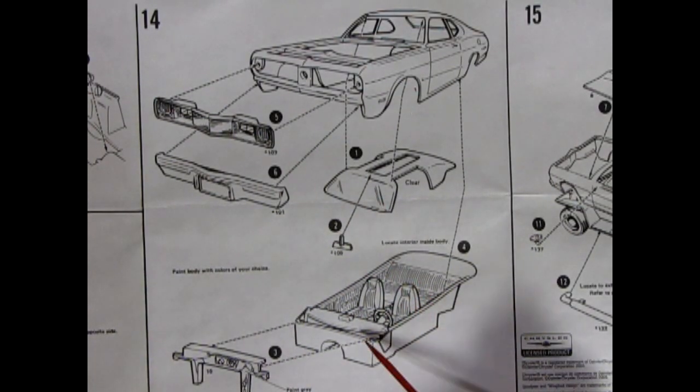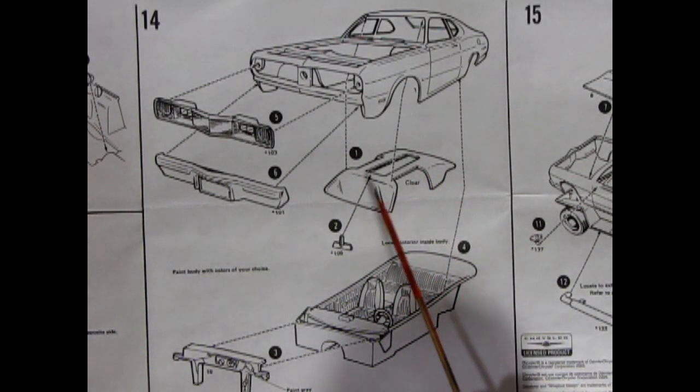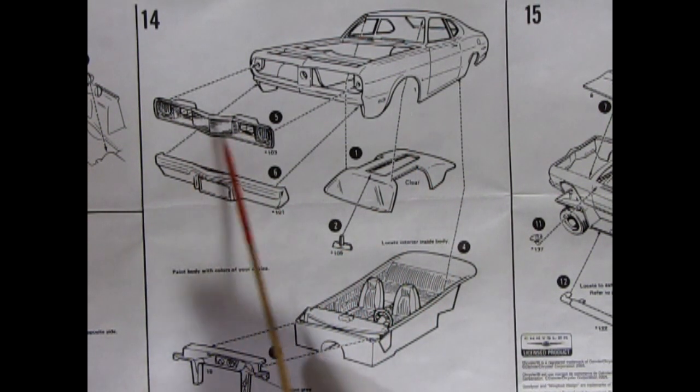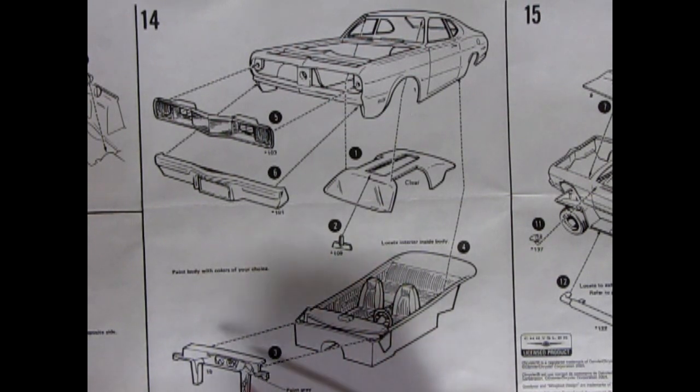Panel 14 shows our interior tub going into the body. You also add in your windows and your rear view mirror, your front grille and your bumper as well as your firewall.